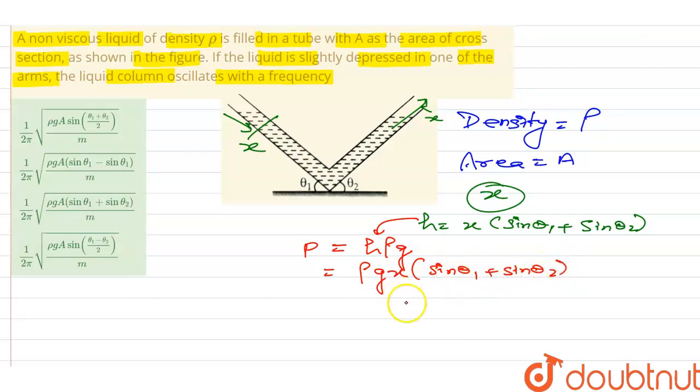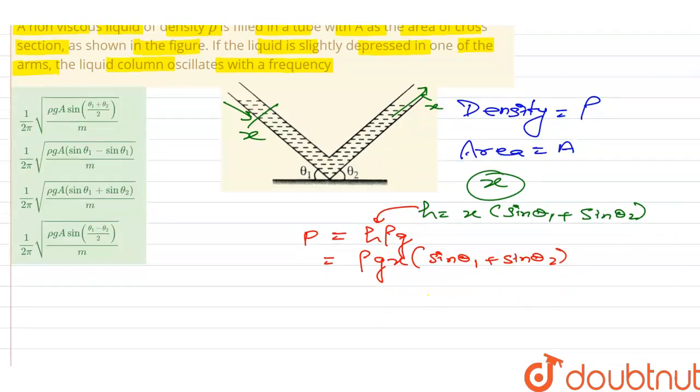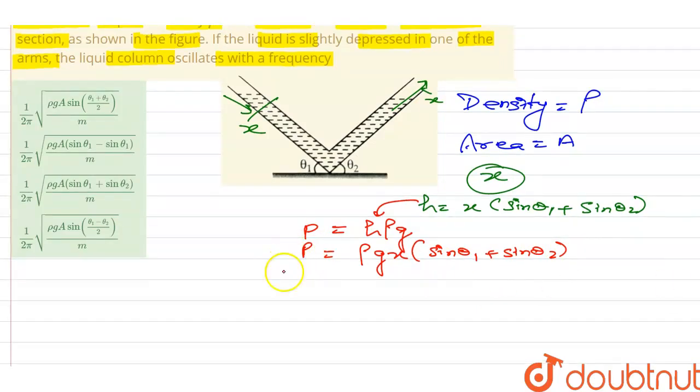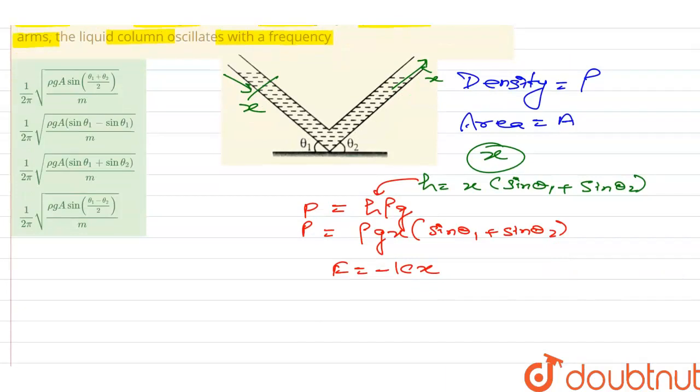Now, if we talk about Hooke's law in SHM, F = -kx, where F is the restoring force, k is the constant, and x is the displacement. The frequency will be 1/(2π)√(k/m). This is the frequency.